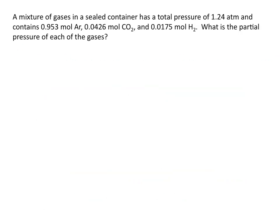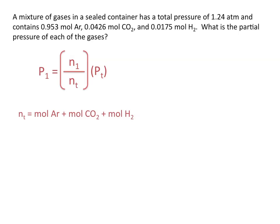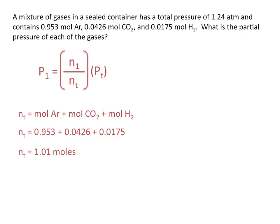Let's try another problem. A mixture of gases in a sealed container has a total pressure of 1.24 atmospheres and contains 0.953 moles of argon, 0.0426 moles of CO2, and 0.0175 moles of H2. What is the partial pressure of each of these gases? The partial pressure of each gas equals the mole fraction — moles of that gas divided by total moles — multiplied by the total pressure. So the total moles equals 0.953 plus 0.0426 plus 0.0175, giving us 1.01 moles.